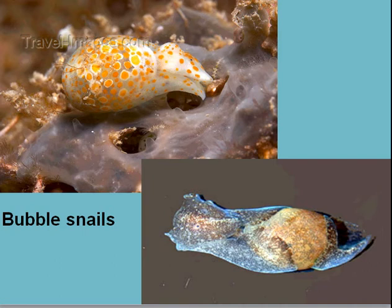Bubble snails have a thin shell, which is sometimes transparent it's so thin, and the mantle comes over and folds over the shell. They can often be found plowing under the surface of the mud, like a little miniature barrel snail or like an olive shell, but they're generally a bit larger — half an inch or so, a couple of centimeters long.